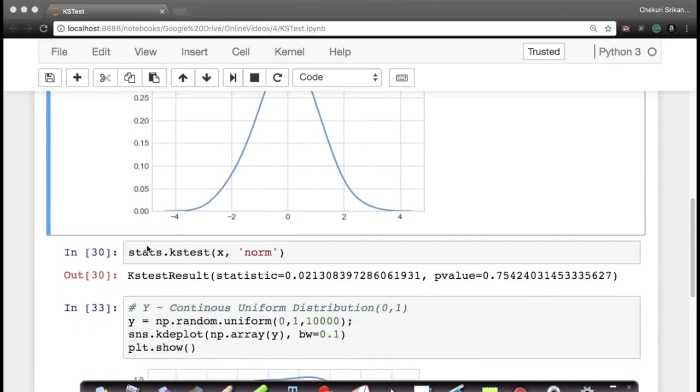In the statistics package, in scipy statistics package, I have a function called KS test. I just have to give my variable x and say compare it with normal distribution. Of course, I can give any other distribution here. As soon as I run this, I get two values: my D value or my statistic and I get my P value.